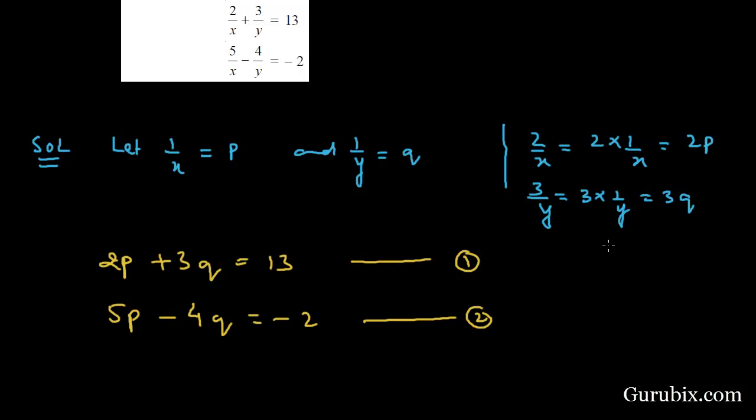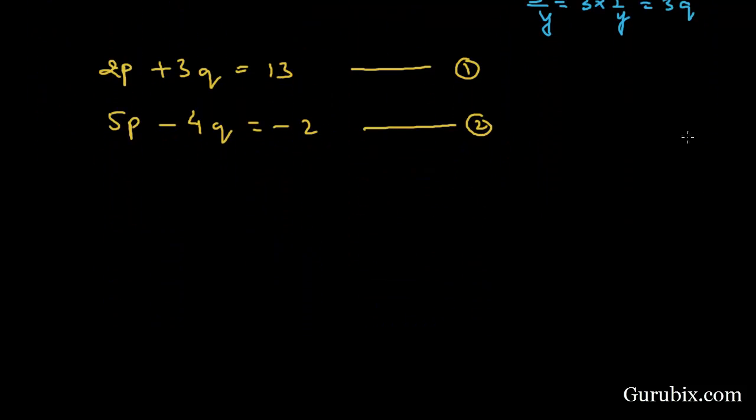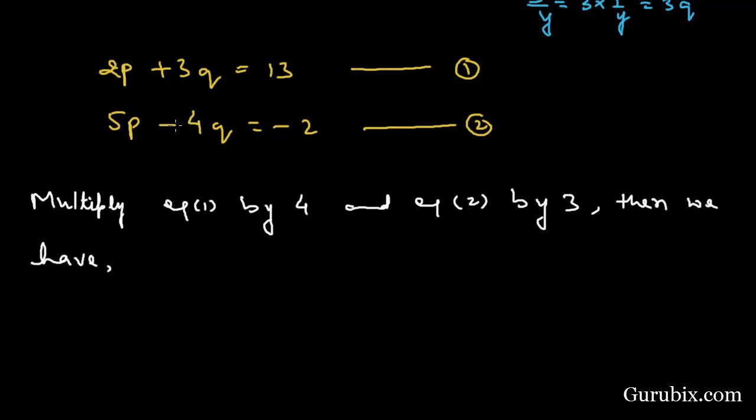shall multiply equation 1 by 4 and equation 2 by 3. Then we have 8p plus 12q equals 52, and if we multiply equation 2 by 3, then we have 15p minus 12